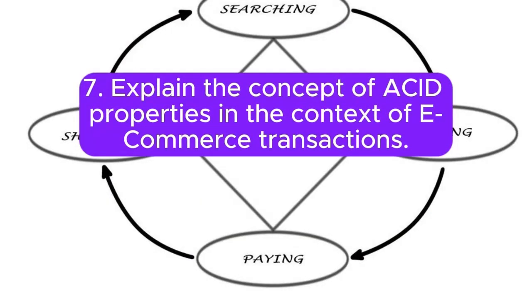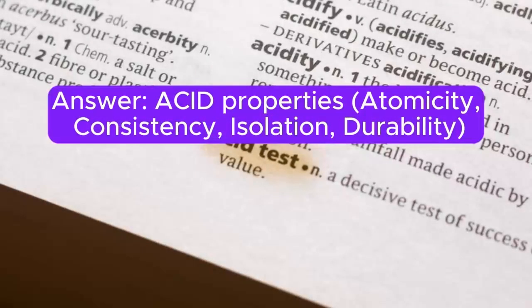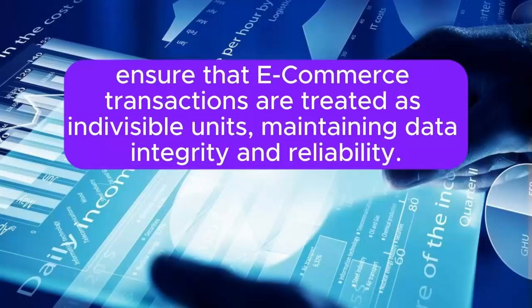Question 7: Explain the concept of ACID properties in the context of e-commerce transactions. ACID properties — atomicity, consistency, isolation, and durability — ensure that e-commerce transactions are treated as indivisible units, maintaining data integrity and reliability.